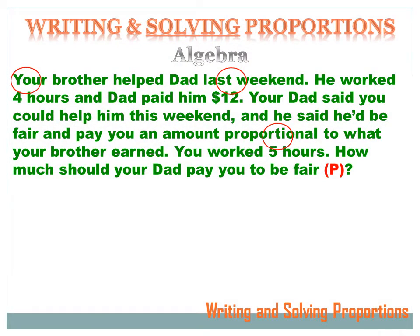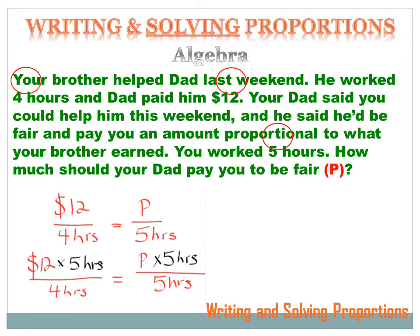We could also solve this proportion problem with algebra. Here's how we do it. I've got the proportion: $12 for four hours equals P per five hours. I've got an algebra expression and I want to solve for P, so I've got to get rid of that divided by five hours. To get rid of divided by five hours, I've got to multiply both sides of the equation by five hours. The right side becomes P times five hours divided by five hours, and the left is 12 times five hours divided by four hours.